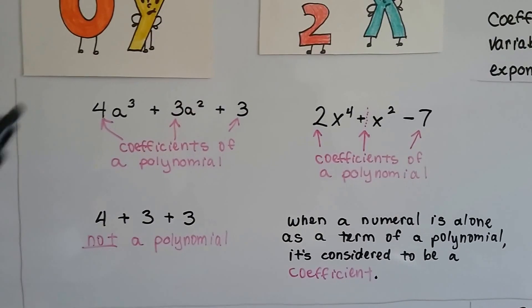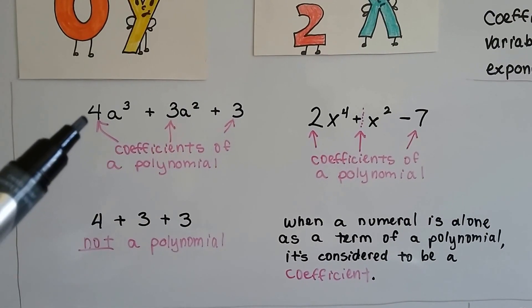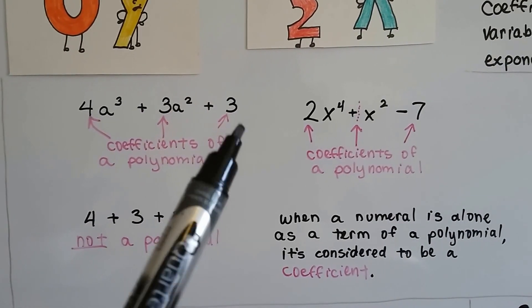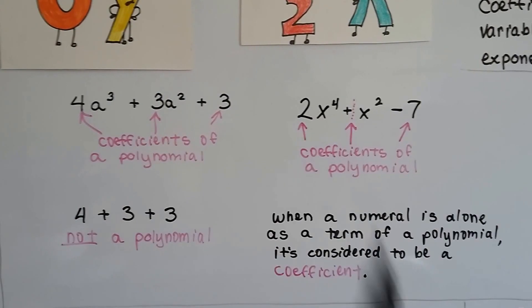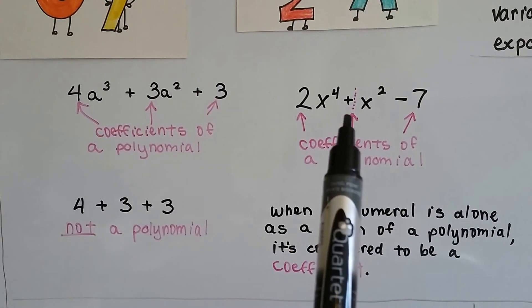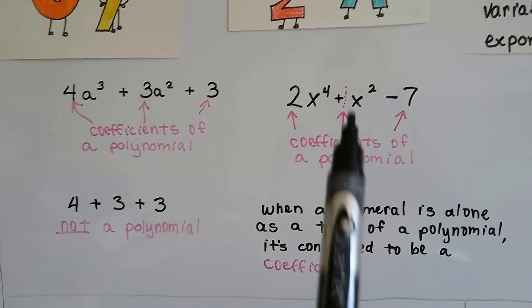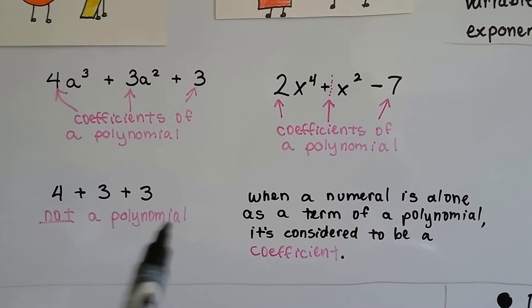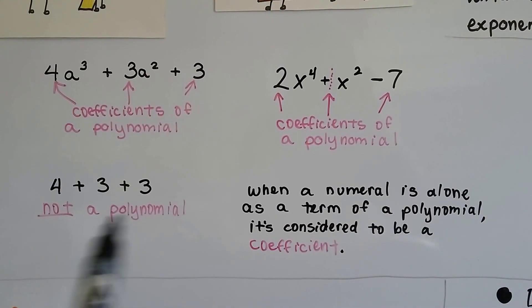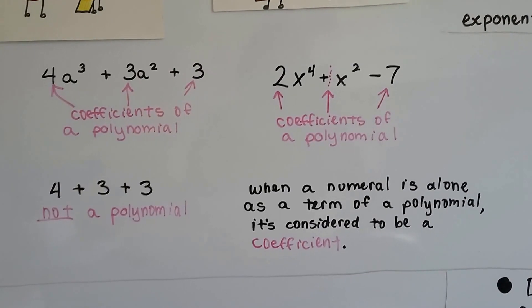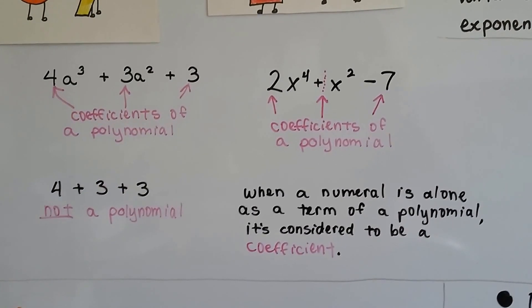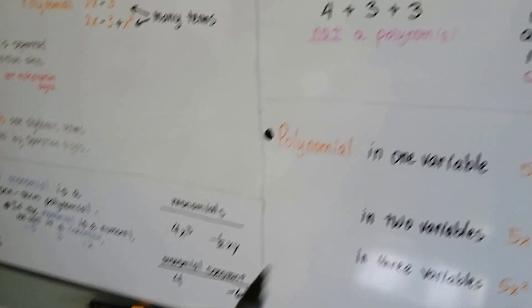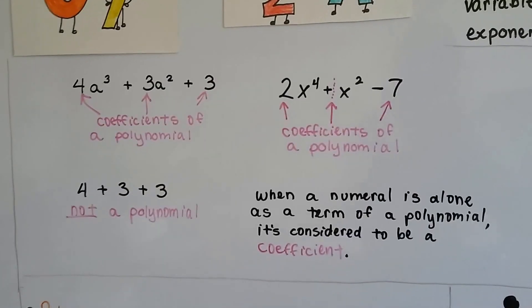So let's take a look at these. These are the coefficients of a polynomial. The 4 in front of the a to the third power, this 3, and that 3 is even a coefficient because it's in a polynomial. And this 2 is a coefficient. And in front of this plus x squared, there's an invisible 1 coefficient. And this 7 is a coefficient. This is not a polynomial. This is just an addition sentence. When a numeral is alone as a term of a polynomial, it's still considered to be a coefficient. If it's a monomial, then it's a constant. But in a polynomial, it's considered a coefficient.